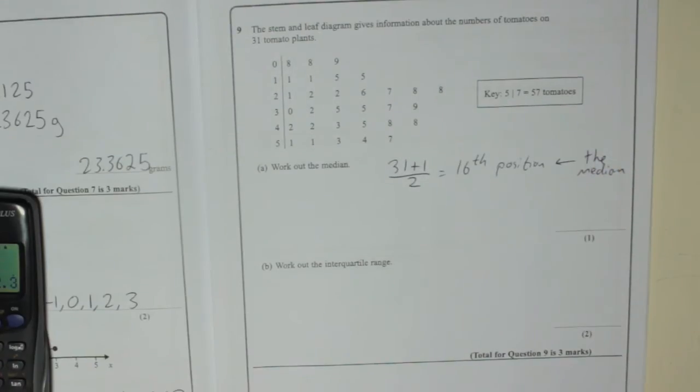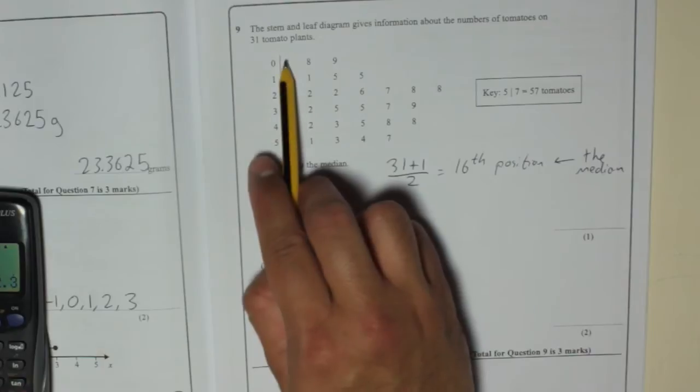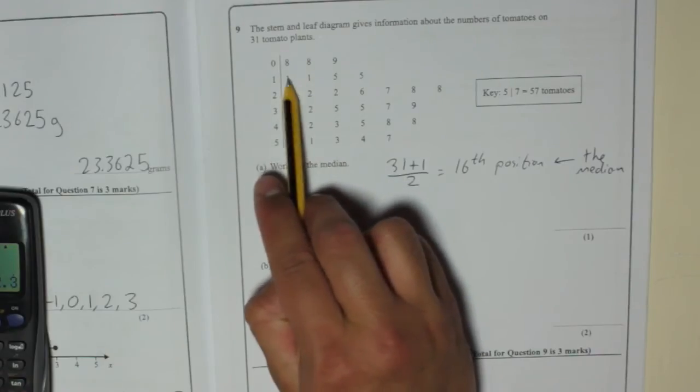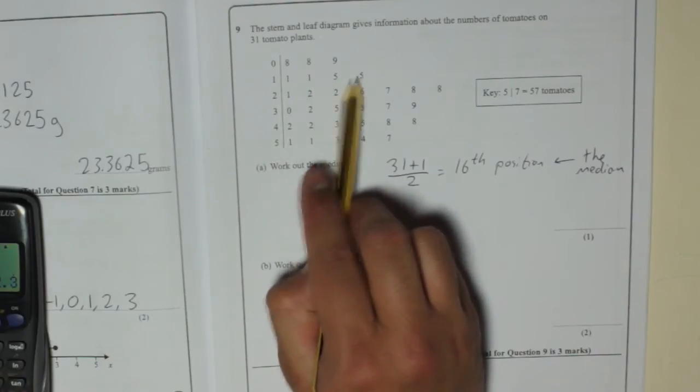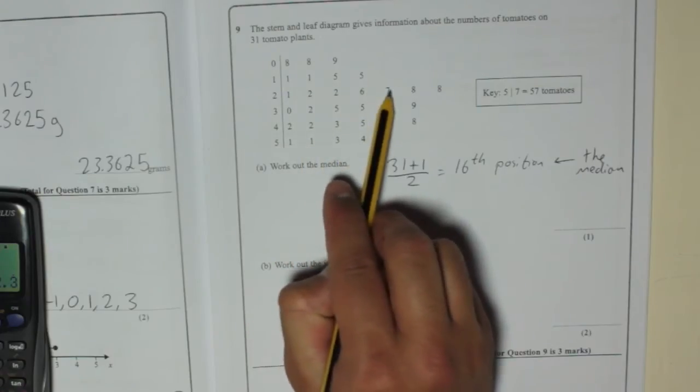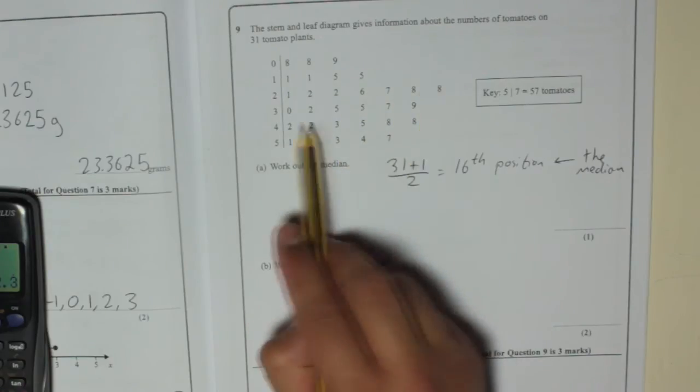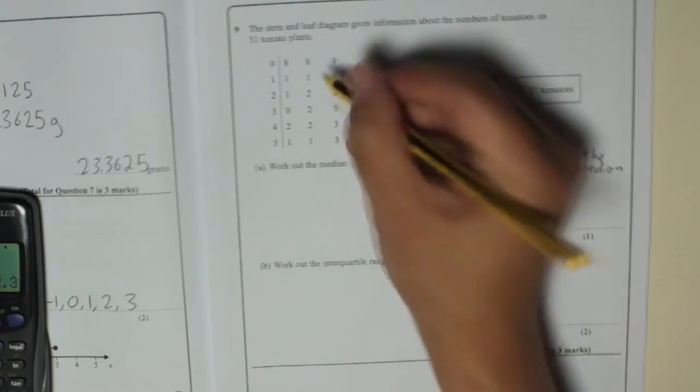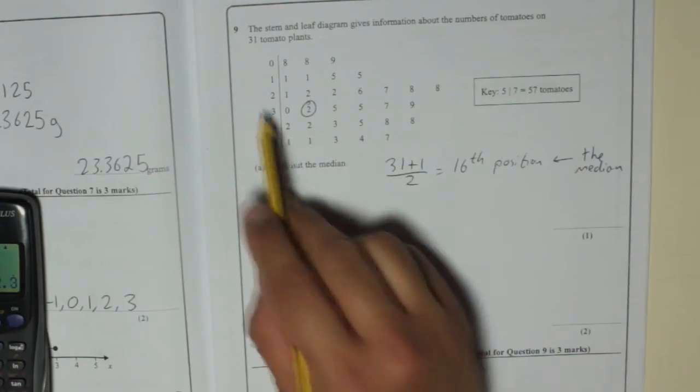Okay, 16th position. So 1, 2, 3, 4, 5, 6, 7, 8, 9, 10, 11, 12, 13, 14, 15, 16. So the 16th position is there. So it's 32.